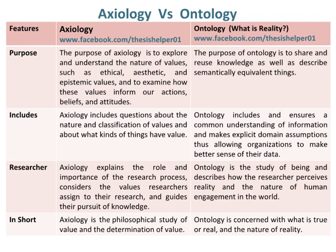Axiology includes questions about the nature and classification of values and about what kinds of things have value. Whereas, ontology includes and ensures a common understanding of information and makes explicit domain assumptions, thus allowing organizations to make better sense of the data.